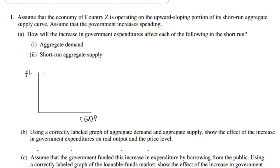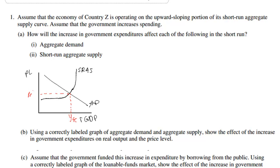We have a downward sloping aggregate demand curve and an upward sloping aggregate supply curve. As implied in this question, there are actually different ranges to the aggregate supply curve. The short-run aggregate supply curve includes a horizontal range below full employment, an upward sloping range around full employment, and a vertical range beyond full employment. We're assuming this economy begins in the upward sloping range, producing somewhere near its full employment level with a corresponding equilibrium price level.